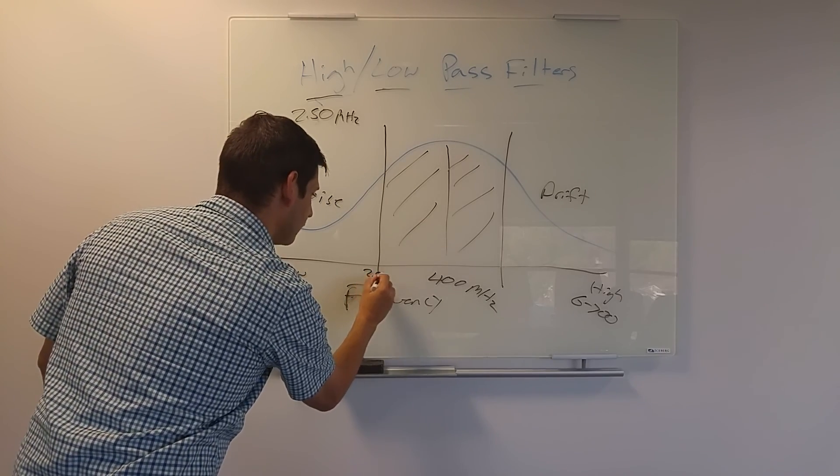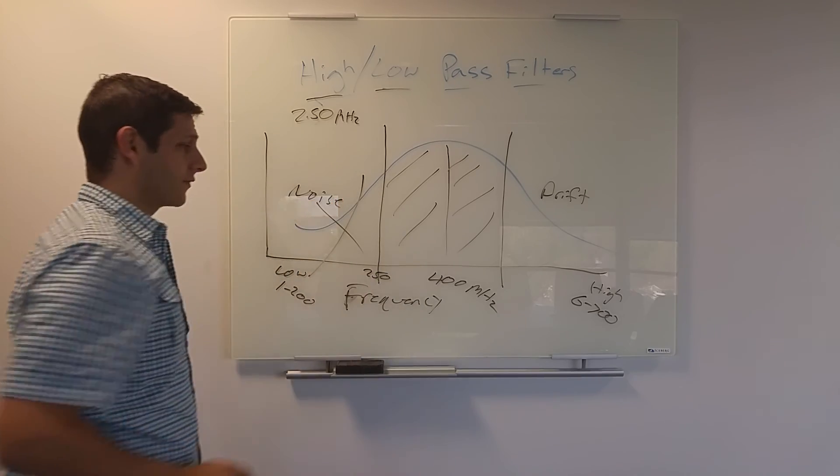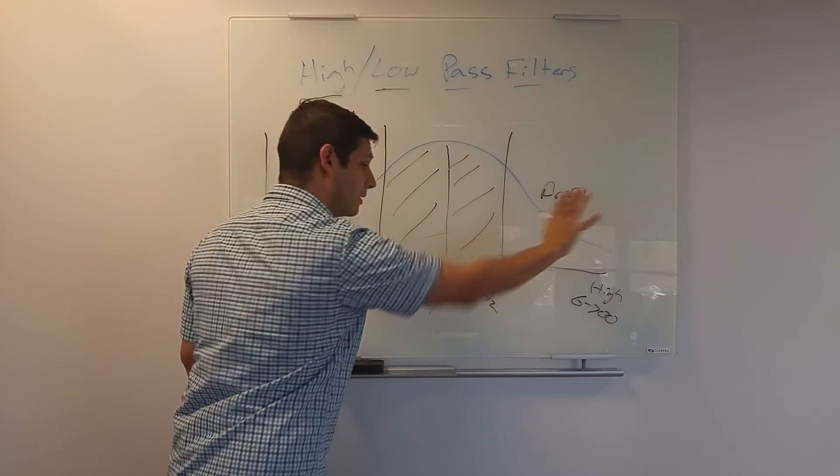And here's 250. So what happens is, all of this is gone from your data. Because it's a high pass, everything above it passes.